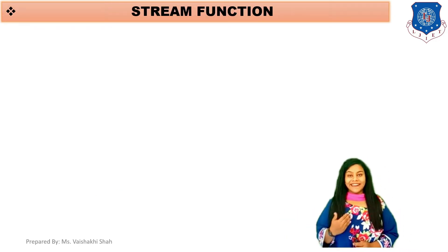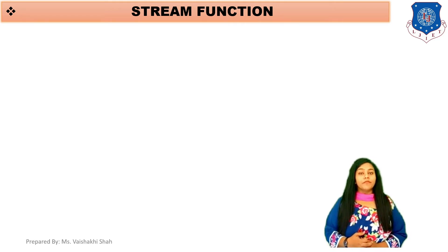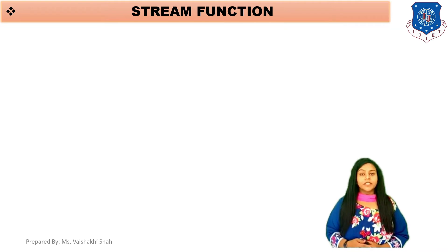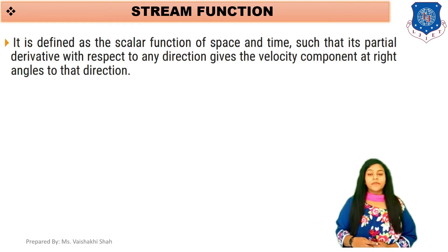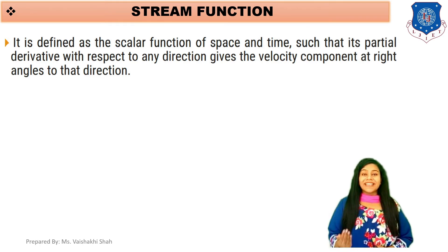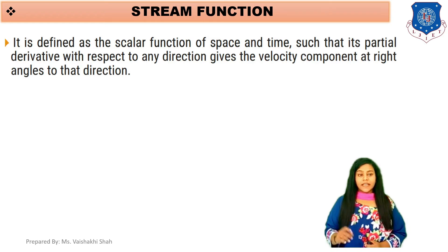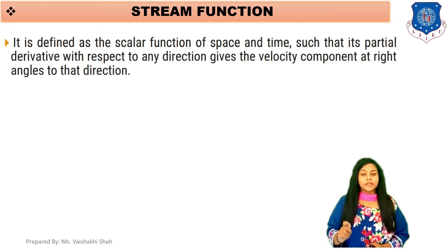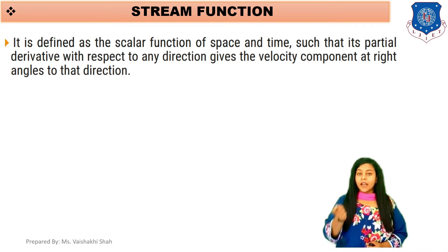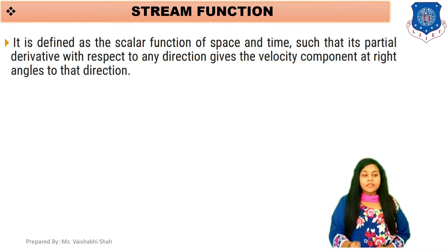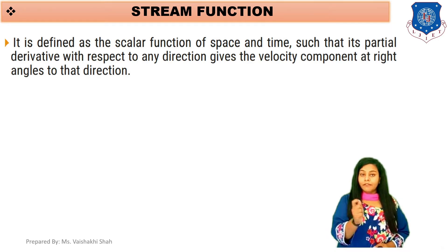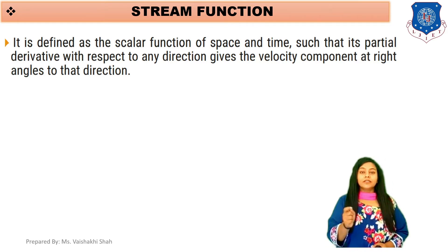Moving further to our next function, called stream function. We discussed velocity potential function, which is indicated as phi. Another function is called stream function and it is indicated as psi. The definition of stream function: it is defined as a scalar function of space and time such that its partial derivative with respect to any direction gives the velocity component at right angle to that direction.